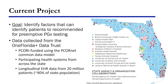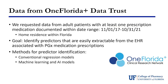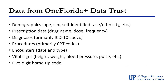We requested data from adult patients with at least one prescription medication documented within a four-year date range with home residency within Florida, since One Florida extends slightly into Georgia and Alabama but those states weren't fully covered. We were looking for predictors easily extractable from the EHR, since that's the best way for this to be implemented in clinical practice — using variables likely present in almost every patient. The methods chosen for predictor identification were both conventional regression models and machine learning and AI models, to compare whether one performs better or if they're equivalent.